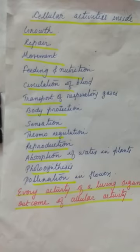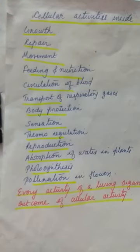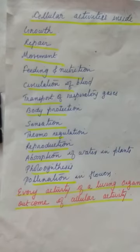Reproduction is also a cellular activity — in single-celled organisms like amoeba, the body divides into two daughter cells. Absorption of water in plants occurs with the help of the unicellular root hair structure. Pollination in flowers involves the beautiful coloration of flowers due to coloring pigments present inside the cells, which is also a type of cellular activity.